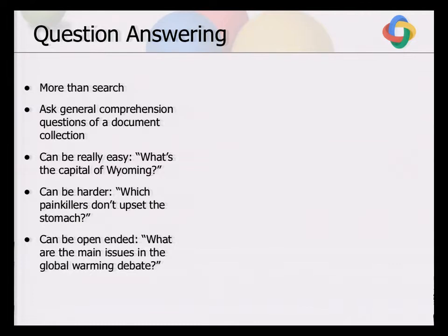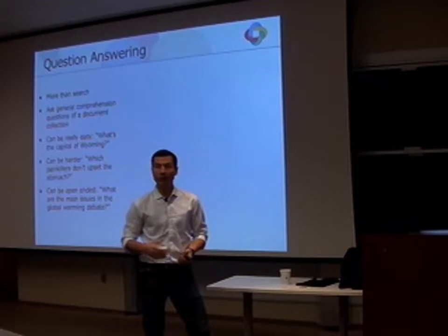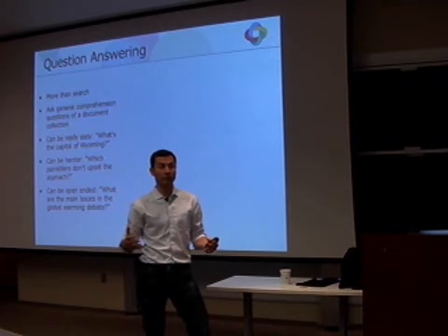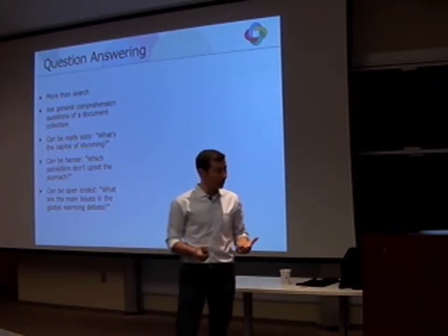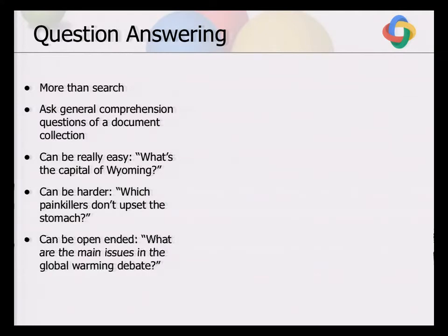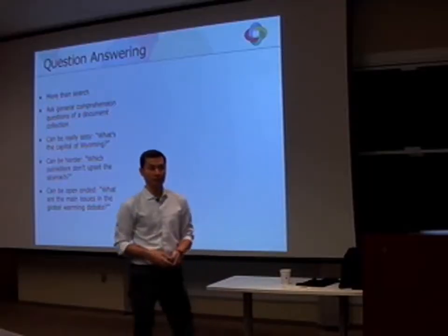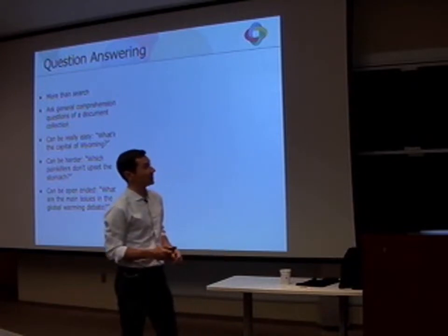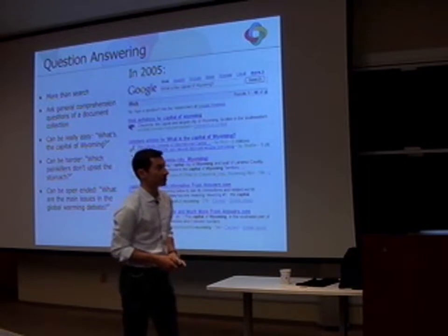Questions can come in various types. There are simple fact-seeking queries like 'What's the capital of Wyoming?' But questions can also be harder, like 'Which thinkers don't upset the stomach?' — where we're unlikely to just find a webpage with the answer. We might have to collect information from different sources, aggregate it, and do some inference. And there are also open-ended questions like 'What are the main issues in the global warming debate?' where there's no clear-cut answer.